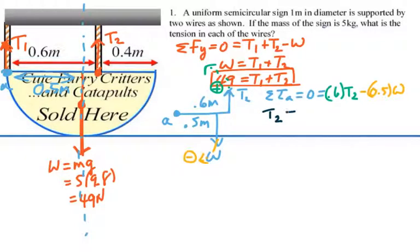Solving for T2 we would have T2 is equal to 0.5 divided by 0.6 times the weight which would be 5/6 times 49 which is equal to 40.8 newtons.